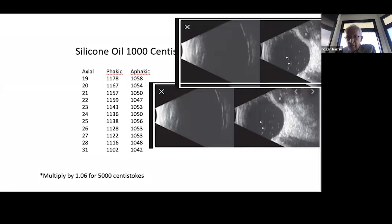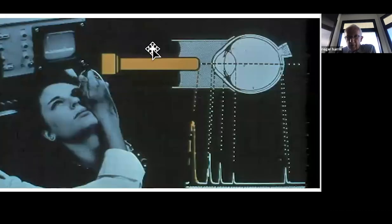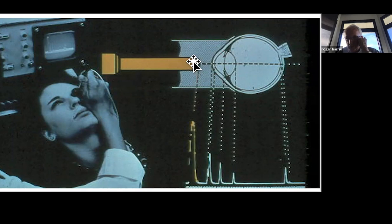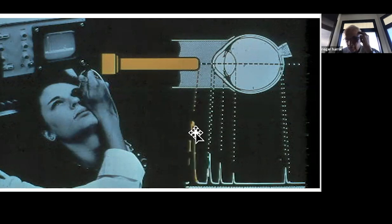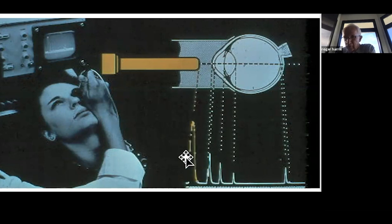The immersion A-scan display separates all anterior segment structures: the initial probe signal, then a gap through the fluid bath, then the corneal spike, anterior chamber space, anterior lens surface, posterior lens surface, vitreous, and finally the retinal spike. If the probe contacts the cornea directly, all of those anterior structures collapse into the dead zone and are indistinguishable — demonstrating why separating the probe from the cornea is essential.